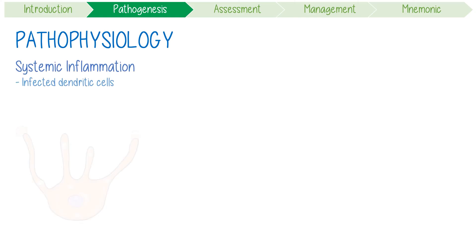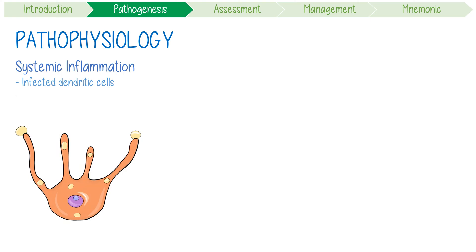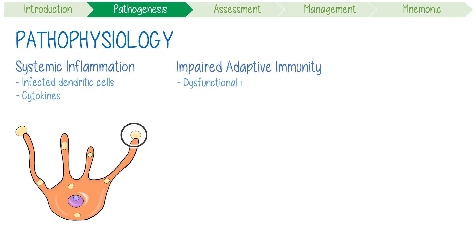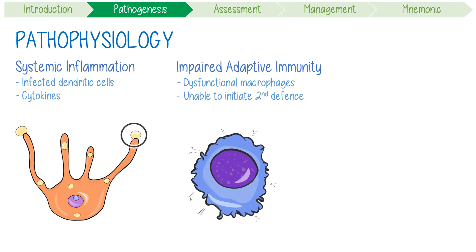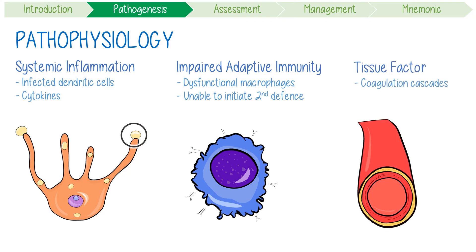Its pathophysiology is really interesting, but there are three key things to remember. Firstly, it causes systemic inflammation — infected dendritic cells and macrophages produce large quantities of cytokines and chemokines. Secondly, you get a severely impaired adaptive immune response, as dysfunctional macrophages and dendritic cells are unable to initiate the second line of defence, including B cells. Finally, it induces the production of tissue factor, which initiates coagulation cascades causing disseminated intravascular coagulation (DIC).